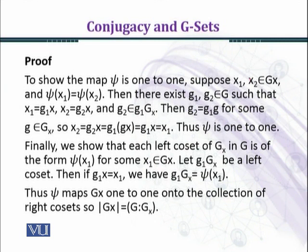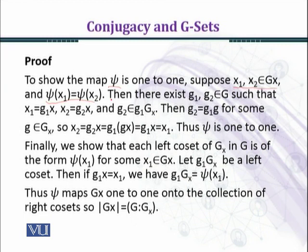So that we can establish that the cardinality of the orbit G_x equals the index of G_x in G. To show that the map psi is one-to-one, suppose x₁, x₂ belong to the orbit G_x and psi(x₁) equals psi(x₂). We want to show this: if images are equal, then inputs are equal.